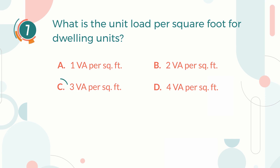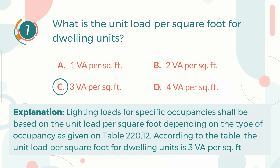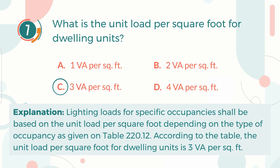The correct answer is C. 3 volt-amperes per square foot. Explanation: Lighting loads for specific occupancies shall be based on the unit load per square foot depending on the type of occupancy as given in NEC Table 220.12. According to the table, the unit load per square foot for dwelling units is 3 volt-amperes per square foot.